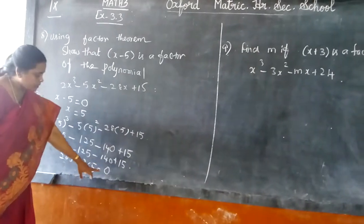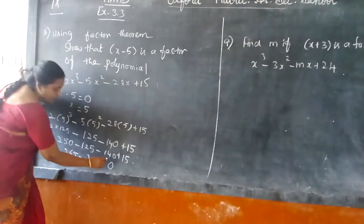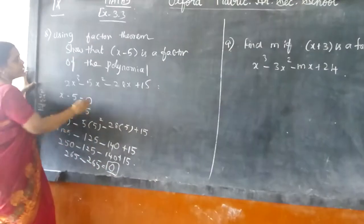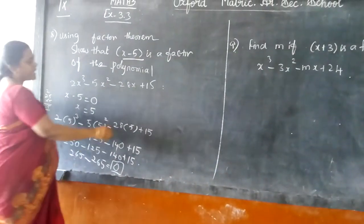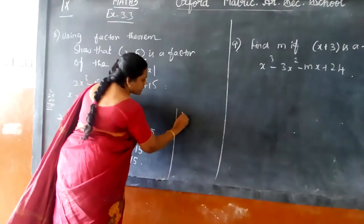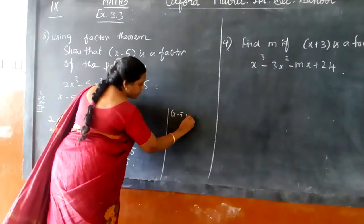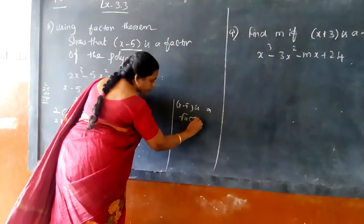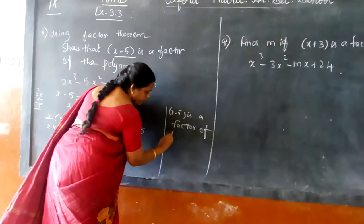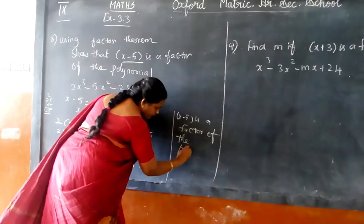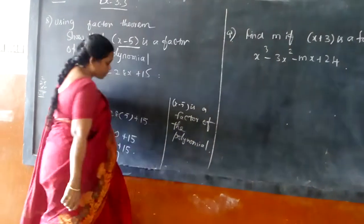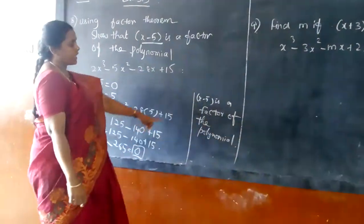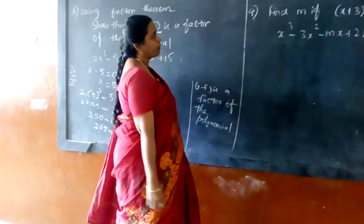When we get the value of 0 in answer, then you can say very surely this is a factor of the polynomial. So we can write here as x minus 5 is a factor of a polynomial. If suppose you are not getting 0, then you should say that this is not the factor of the polynomial.